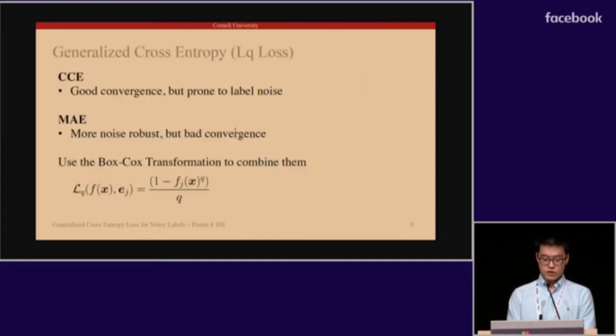On one hand, we have cross-entropy loss, which has good convergence properties but is prone to label noise, and on the other hand, we have mean absolute error, which is more noise-robust but has bad convergence properties.